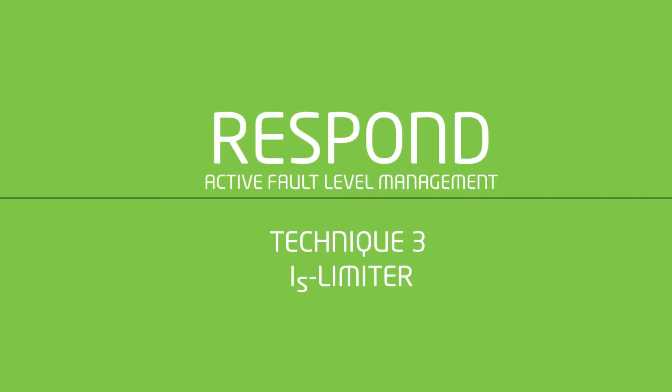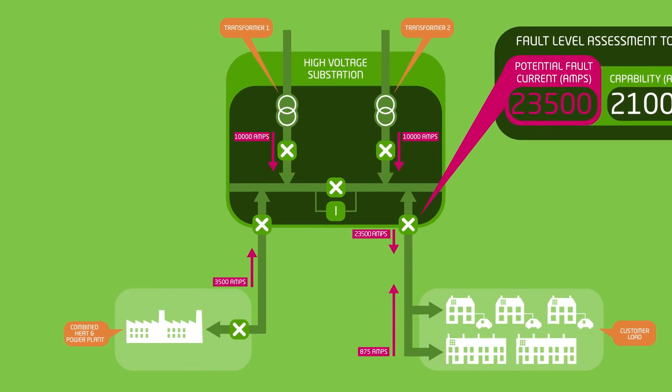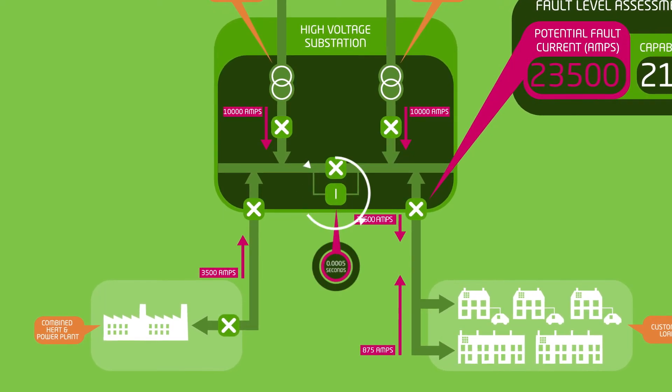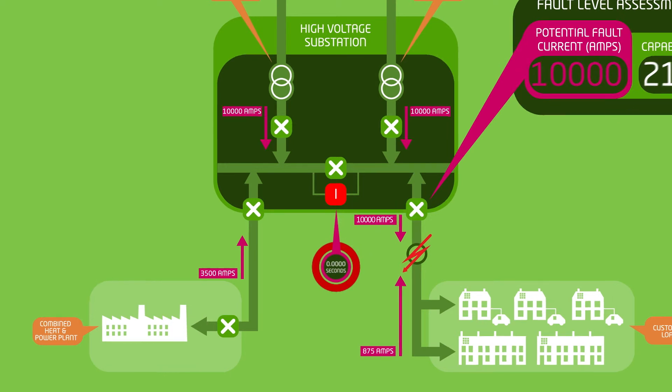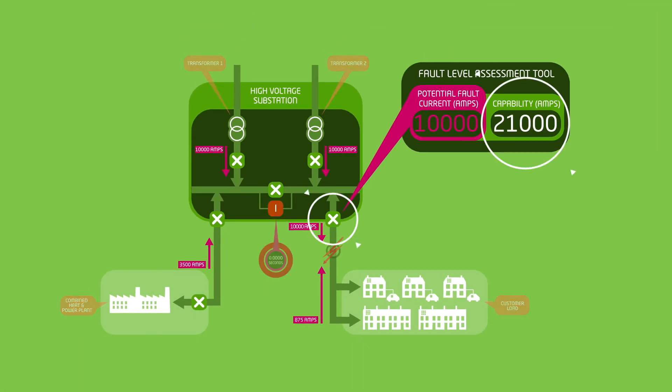Our third technique is a fault current limiting device known as the IS limiter. When a fault occurs, the IS limiter is activated within half a millisecond, so fast that neither the transformer nor the generator contribute to the fault current. This reduces the total amps flowing to the fault to a level well within the capability of the high voltage circuit breaker, and prevents damage to the network.